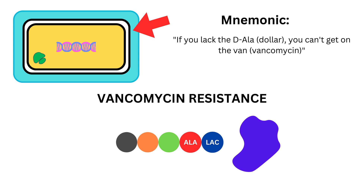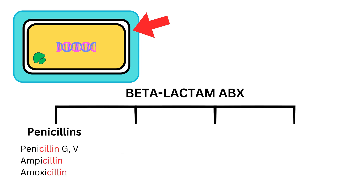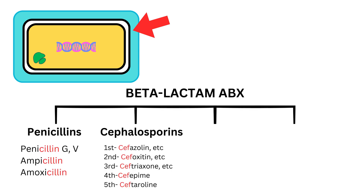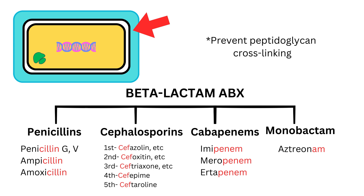Beta-lactam antibiotics such as penicillins, cephalosporins, carbapenems, and monobactams work on the bacterial cell wall by preventing peptidoglycans from cross-linking.